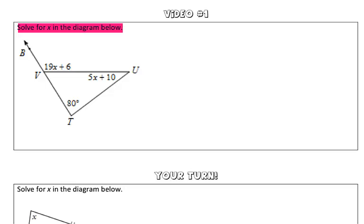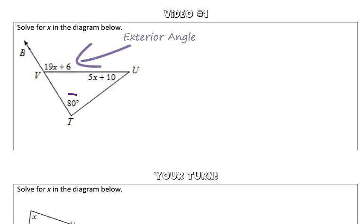In this problem, we are asked to solve for x in the diagram below. So taking a look, we are given the measure of angle BVU, which is 19x plus 6, and this is the exterior angle of the triangle.